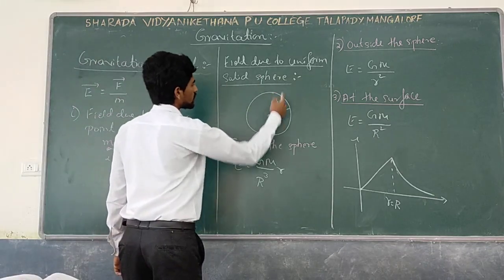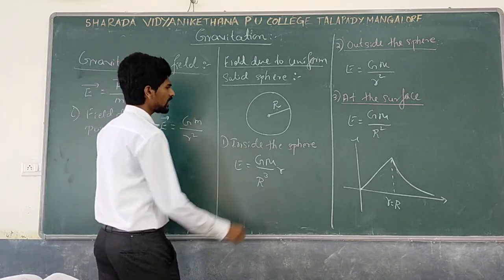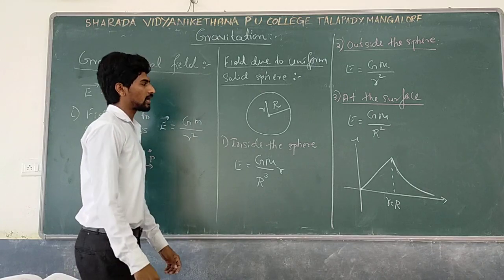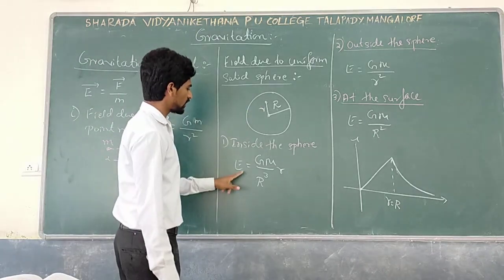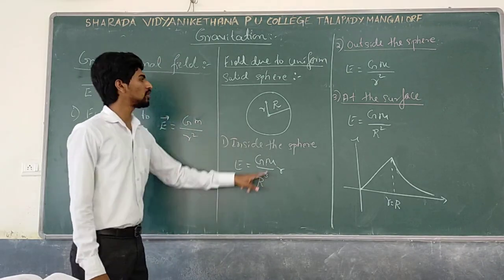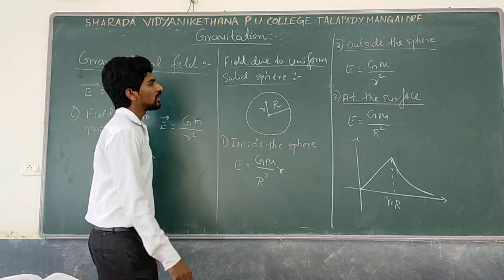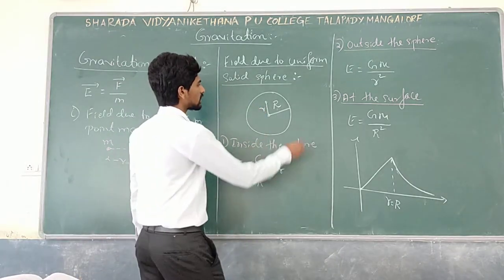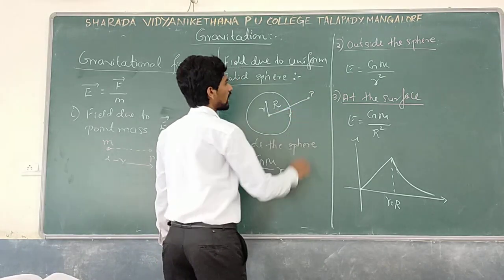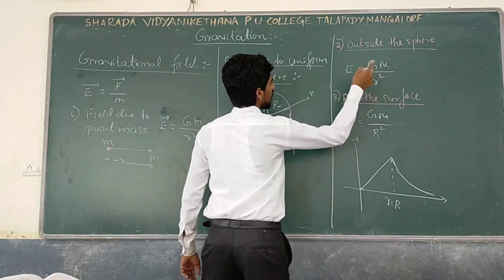Next is the gravitational field due to a uniform solid sphere of radius R. Consider a point at distance r inside the sphere. At this point, the gravitational field is GM by R cube into r, where R is the radius of the sphere. Outside the sphere, at a point P at distance R, the gravitational field is given by GM by R square.